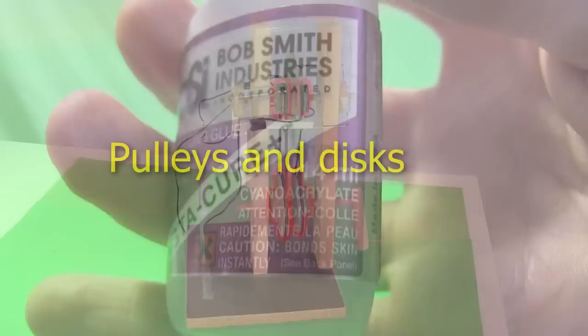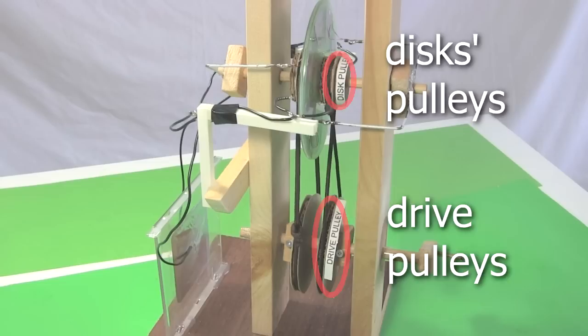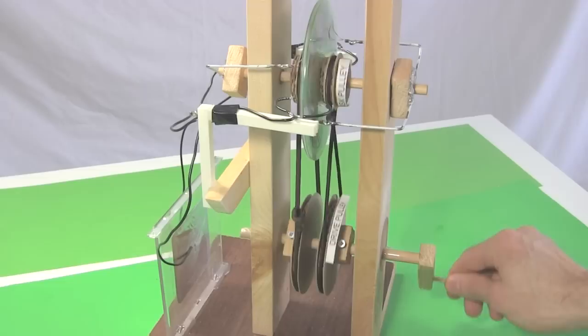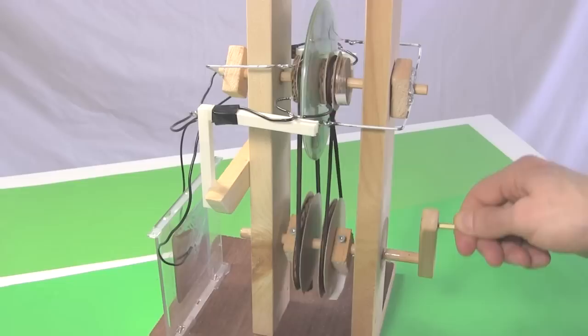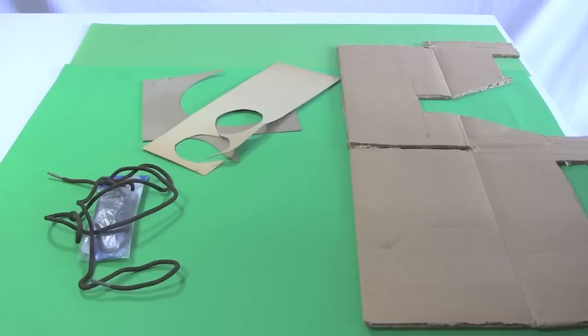The place to start is with the pulleys and then the discs, since together they determine the size of the overall machine. The disc pulleys should be a lot smaller than the drive pulleys. That way a single turn of the drive pulleys will result in many turns of the disc pulleys, making it easy to get faster disc rotation and more frequent sparks. Here you can see that one turn of the drive pulleys gives a little over two turns of the disc pulleys.